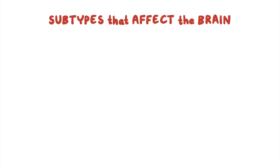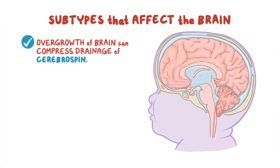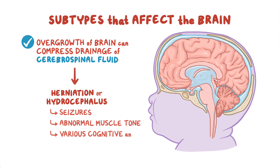Some subtypes of PROS affect the brain. Overgrowth of the brain can compress the drainage of the cerebrospinal fluid, resulting in herniation or hydrocephalus, which in turn can cause seizures, abnormal muscle tone, and various cognitive and behavioral disabilities.